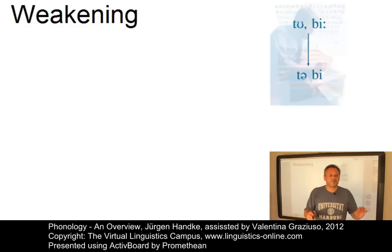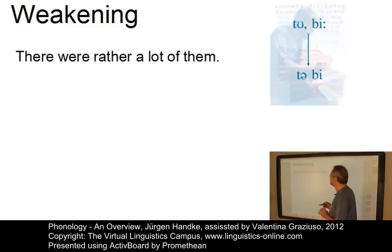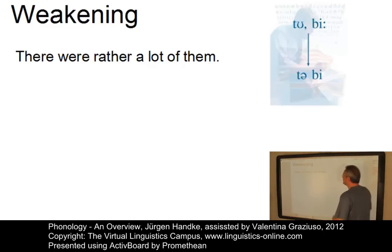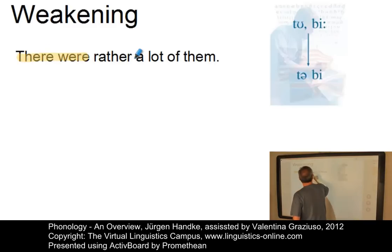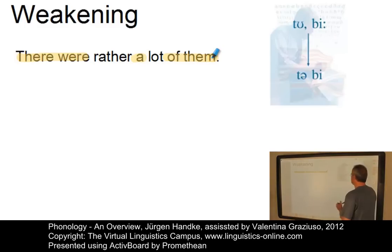The importance of weak forms can easily be illustrated. Let's first read out each word of this sentence as if it occurred in isolation: 'There were rather a lot of them.' In conversational English we get: 'there were rather a lot of them,' and you get the following weak forms. Five out of seven words are reduced, with a vowel that is either schwa or even dropped entirely, as in 'them' — 'a lot of them.'